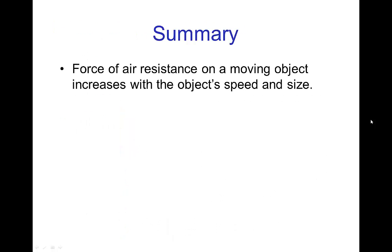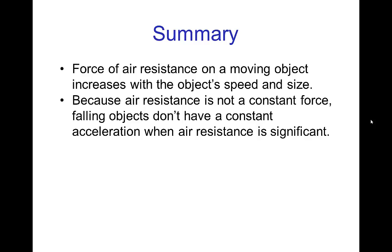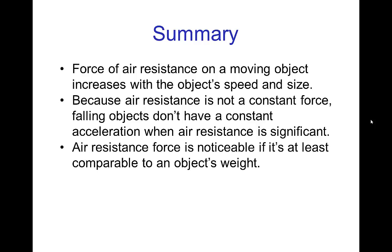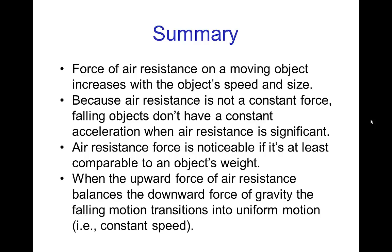In summary, the force of air resistance on a moving object increases with the object's speed and size. Because air resistance is not a constant force, falling objects don't have a constant acceleration, and this is most noticeable when air resistance is significant. The air resistance force is significant or noticeable if it's at least comparable to an object's weight. And for a falling object, once the upward force of air resistance balances the downward force of gravity, then the falling motion transitions into uniform motion at a constant speed.